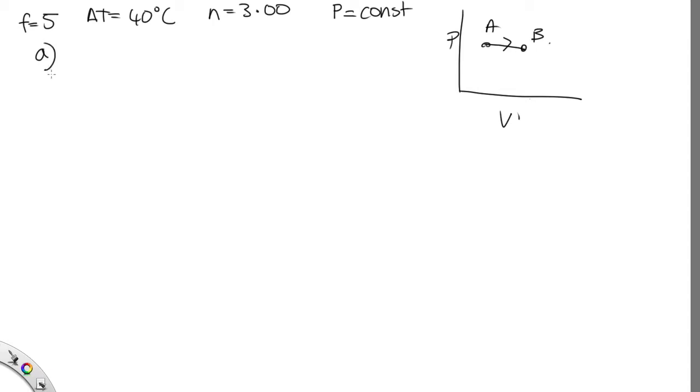And part A, we were asked how much energy is transferred to the gas as heat. In this case, there's no easy way to use the first law of thermodynamics because we're not told anything about the internal energies or what the initial temperatures were or the initial volumes. So we'll need to use Q equals N Cp delta T. Cp is the molar heat at constant pressure.